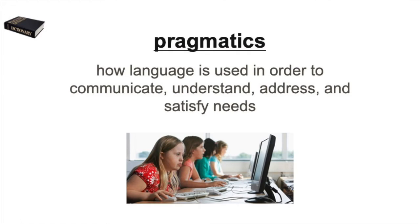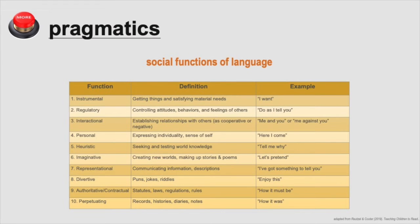The last component of oral language structure is pragmatics. Pragmatics is how language is used in order to communicate, understand, address, and satisfy needs — in other words, the social function of language. This sounds like an advanced literacy skill, but even babies and toddlers understand how to use language of some kind to communicate their needs. This table breaks down the various pragmatic or social functions of language. The main thing to know is that pragmatics is what children learn when they realize they can get needs met through language.